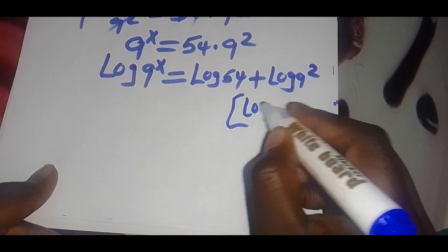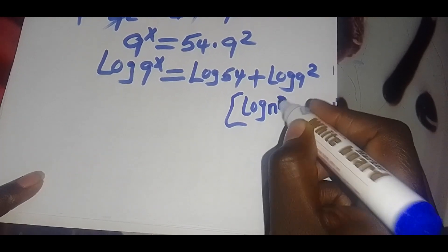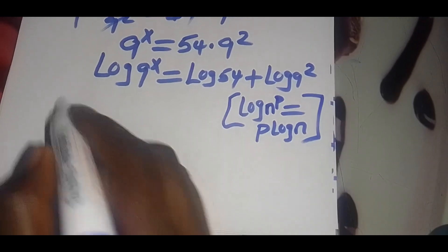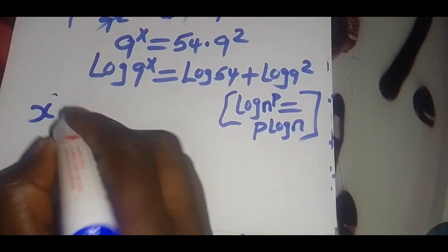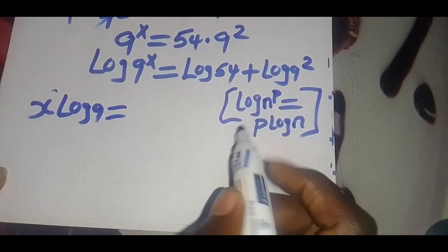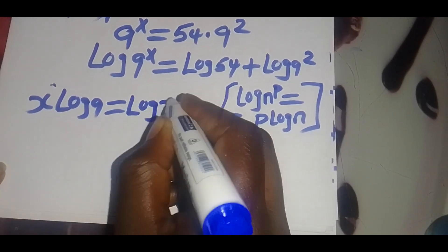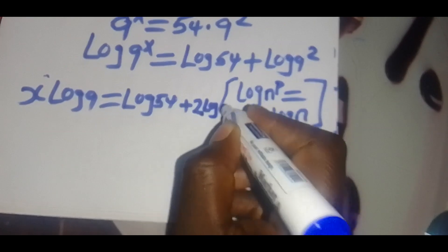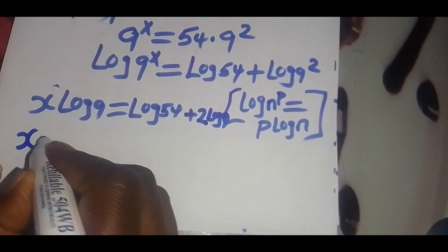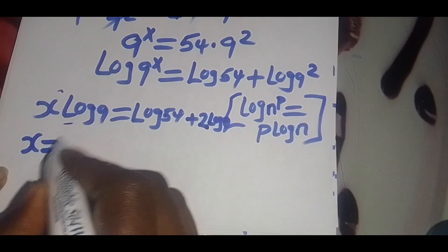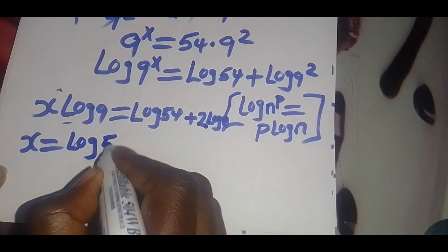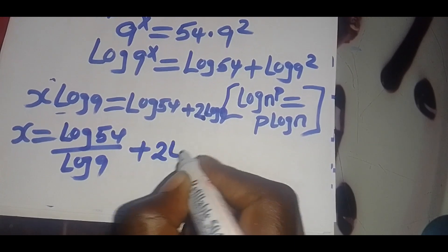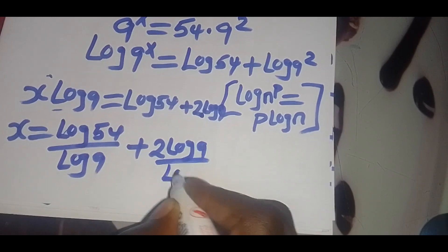If you have log n raised to the power p, this can be expressed as p times log n. Applying this property, we'll have x times log 9 equals log 54 plus 2 times log 9. Dividing through by log 9, we have x equals log 54 divided by log 9, plus 2 times log 9 divided by log 9.